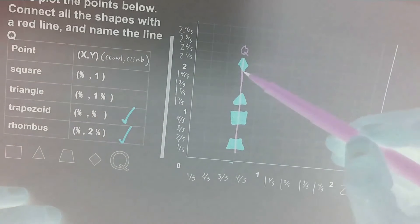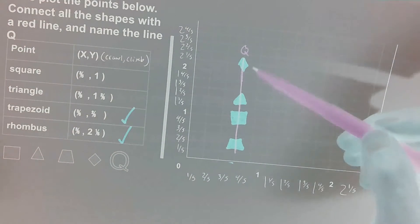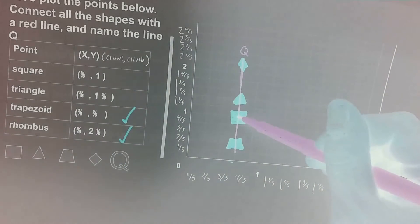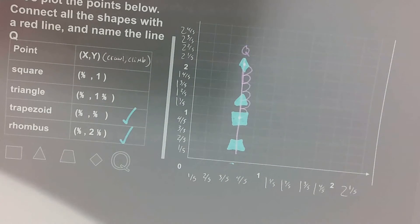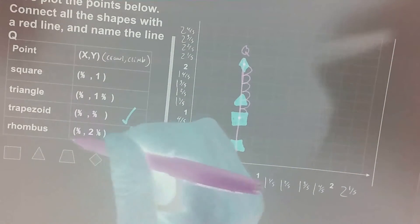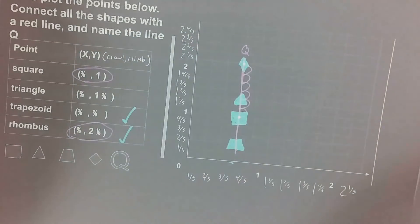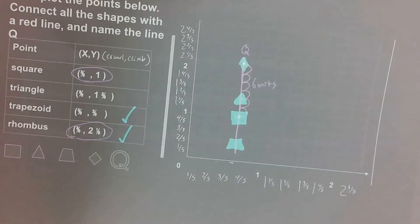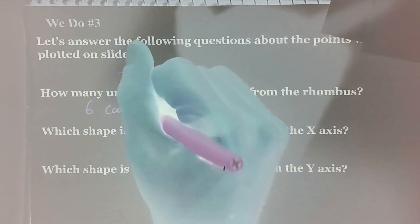So we're just going to count from our point where we mark the square, which was three-fifths and one. Here's our square and the rhombus, which had coordinate points of three-fifths and two and one-fifths. We're just going to count one, two, three, four, five, six. I referred back to my chart because our shape kind of covers more than one point here, but it was that middle part right of the shape that our coordinates were from. So make sure you double check your coordinates because our drawings aren't always going to be perfect. Right there, that was six units, which is the answer to the first question. Now we do number three, six coordinate units.